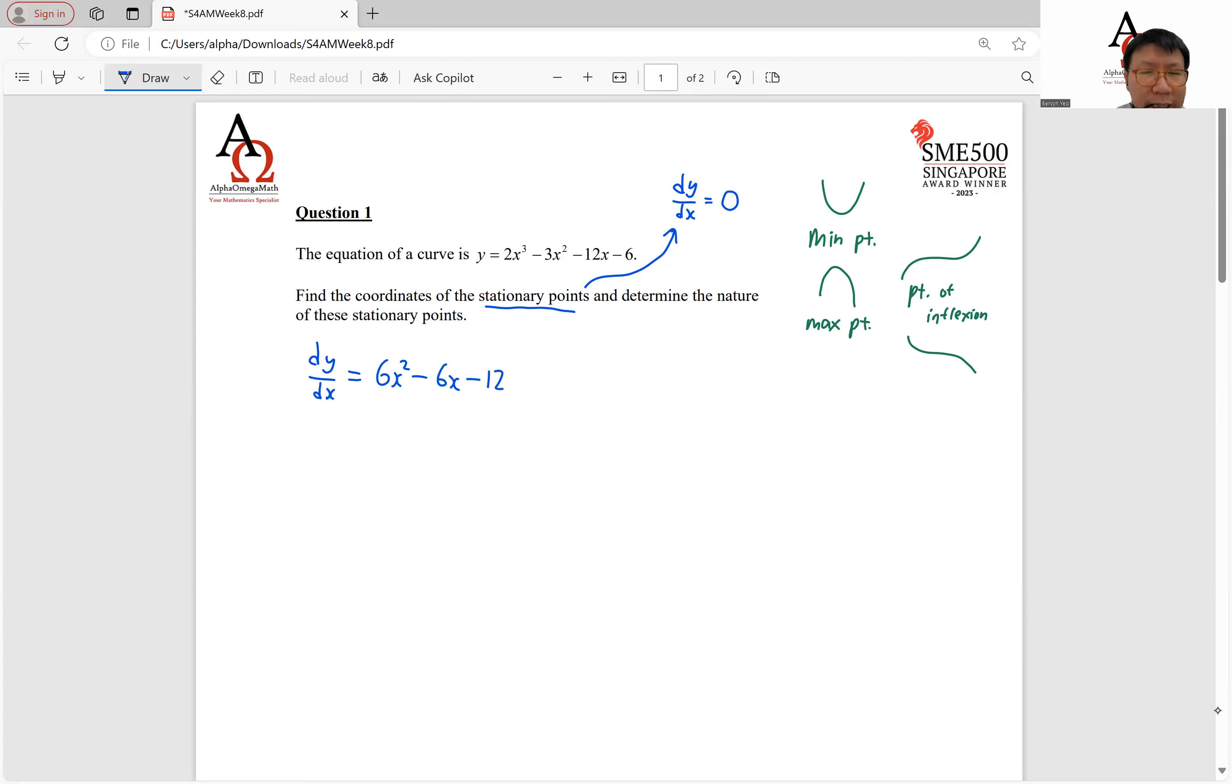So this is our first derivative. And in order to find our stationary points, we will set this to be equals to 0, and we will go ahead to solve for our x value. Now we can make the function a bit easier by dividing throughout by 6. So dividing by 6 throughout the entire function, we will obtain a simpler function that is x squared minus x minus 2 equals to 0.